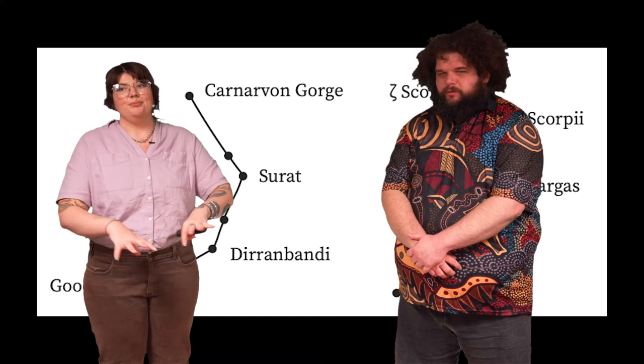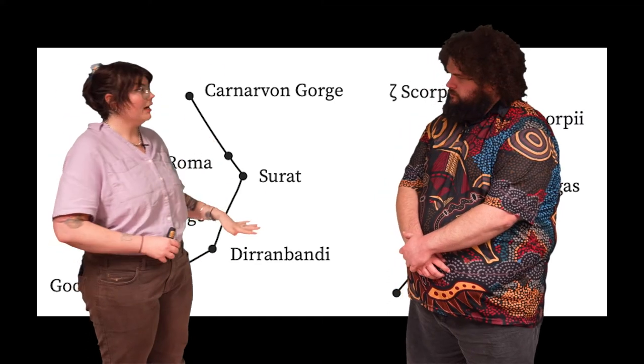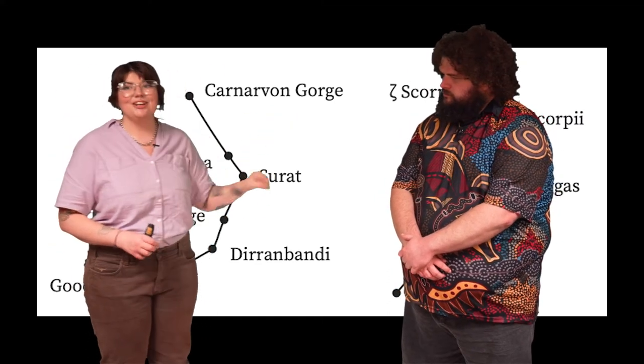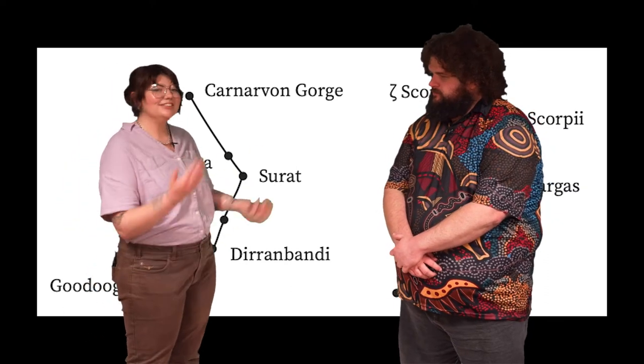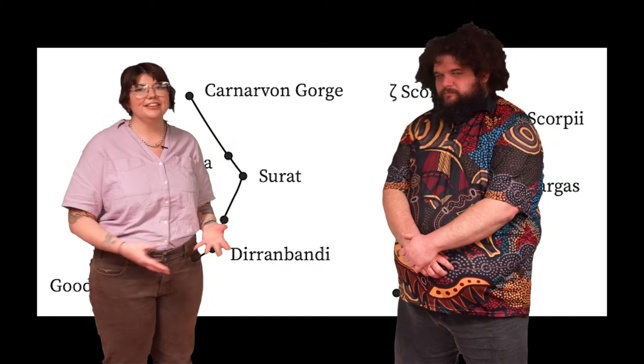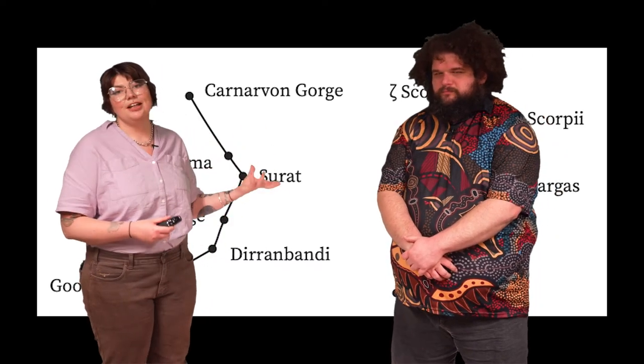Now, over time, the route that this star map, this exact star map tracks, has actually become another highway, kind of similar to what we were talking about with the Songlan's discussion. And this is called Carnarvon Highway.